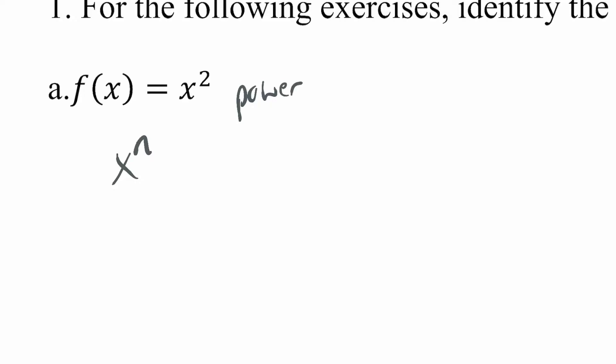If that exponent were like 2.7, it would still be a power function, but it would no longer qualify as a polynomial function. Again, there are some functions that qualify as both, but we will always be more specific — power function is more specific than polynomial when both apply.